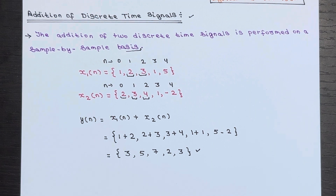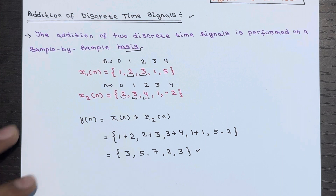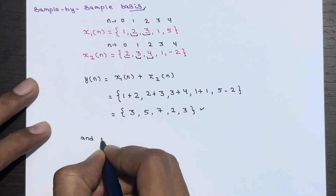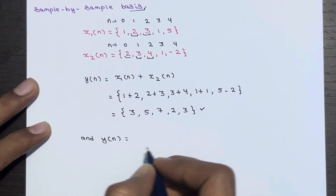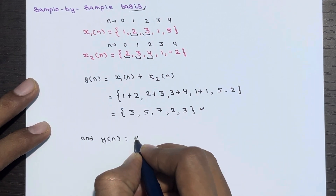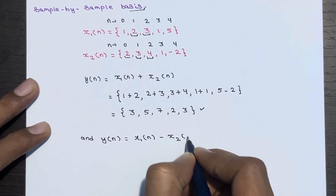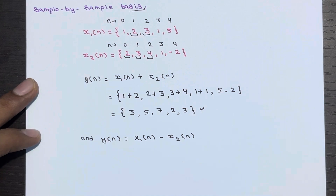Let's see how we can subtract x2(n) from x1(n). This can be done by subtracting each sample of x2(n) from the corresponding sample of x1(n). Let's use an example to make it clear. I want to calculate y(n) equal to x1(n) minus x2(n) — a subtraction operation.